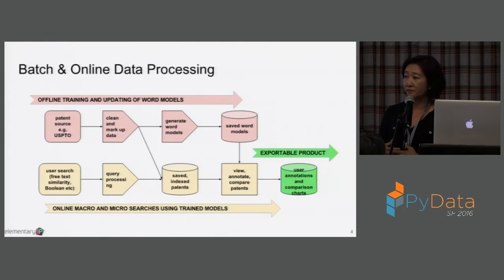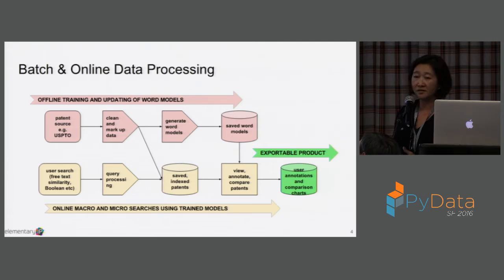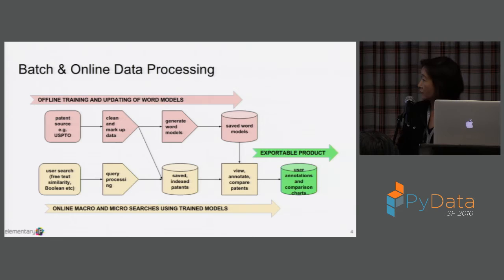Macro-searching is basically: given some phrase that you enter, or in our case even given a patent, patent searchers want to look for similarities — what patents are similar to the one I'm looking at? Given a patent or given some phrase and terms that you type in, we return a list of patents that are similar to the ones you're looking at. The similarity is not just limited to synonyms. In technical areas, technical terms change over time even though they might be talking about the same thing. That's macro-searching.